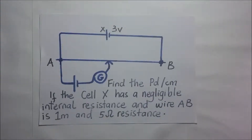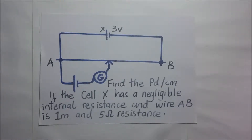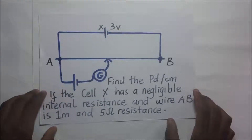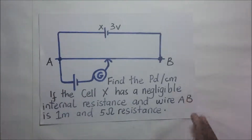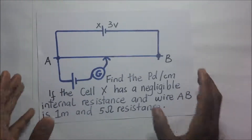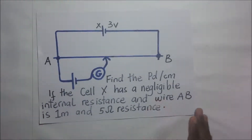In most, if not all, potentiometer calculations, you'll always be required to find the potential difference per unit length or potential difference per unit centimeter. The process of finding PD per unit length is what we call standardizing a potentiometer wire or standardizing the potentiometer.